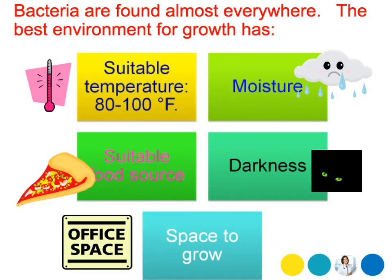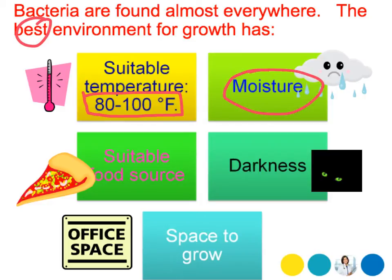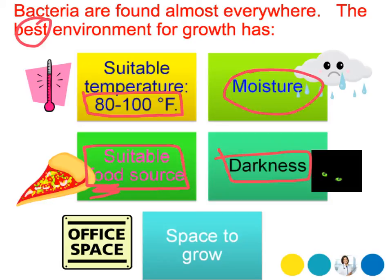Bacteria are found almost everywhere, but the best environment for growth is a temperature between 80 and 100 degrees Fahrenheit — that's what we have in our incubator. They also prefer moisture, a suitable food source like the agar we have them growing on, darkness, and space. With our own bacteria, if they continue to grow, eventually they'll run out of space and will stop growing on their own.